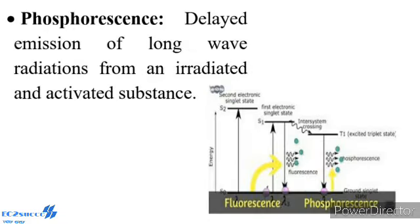Phosphorescence: Phosphorescence means delaying the emission of long-wave radiation from an irradiated and activated substance. At times, the ejected electron loses a small amount of energy in the form of heat and stays in the less-excited state. This state is again unstable and the electron comes back to the ground state by losing radiation energy — this is called phosphorescence, that is, delaying the emission of long-wave radiation from an irradiated and activated molecule.